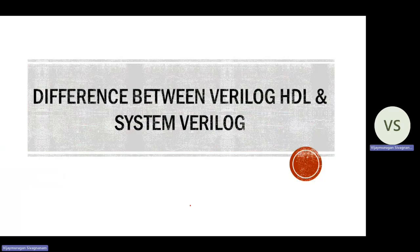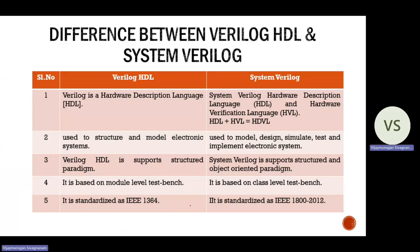I am going to talk about the difference between Verilog HDL and SystemVerilog. The first column represents Verilog HDL and the second column represents SystemVerilog. The first point is: Verilog HDL is a Hardware Description Language, simply called HDL. SystemVerilog is a Hardware Description Language and Hardware Verification Language — so SystemVerilog equals HDL plus HVL, called HDVL, which stands for Hardware Description and Verification Language.